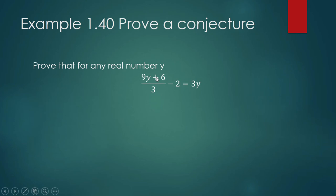This is the conjecture: for any choice of y, (9y + 6)/3 - 2 is equal to 3 times y. Let us work on this. This one must produce something which is equal to 3 times y.